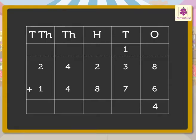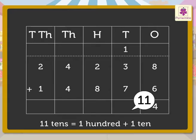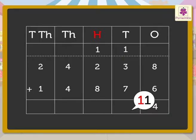Now add the numbers in the tens column: one, three, and seven. We get the number eleven. Regroup the eleven tens — eleven tens equals one hundred and one ten. Carry the one hundred to the hundreds column and write one in the tens column.